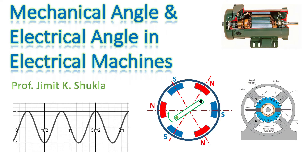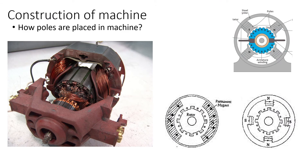In this video we will learn about the concept of mechanical angle and electrical angle in rotary electrical machines. When we learn about the construction of rotary electrical machines, we come across the concept of poles and number of poles — for example, two poles, four poles, six poles — in electrical machines like DC generators, DC motors, or alternators. Now, how is the placement of poles in these machines decided, and at what angle are they placed in the stator periphery?